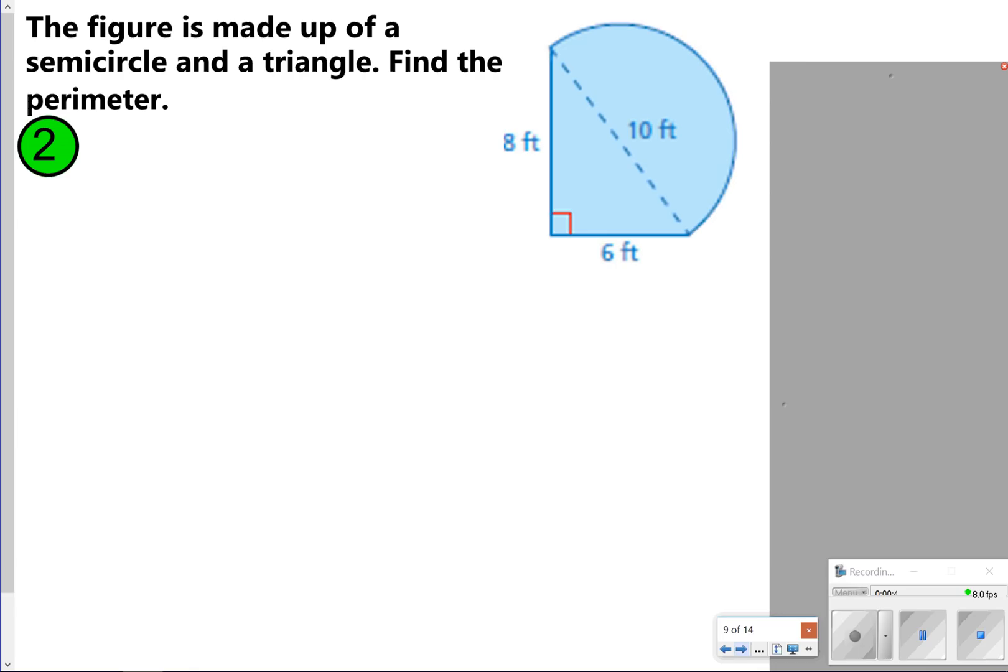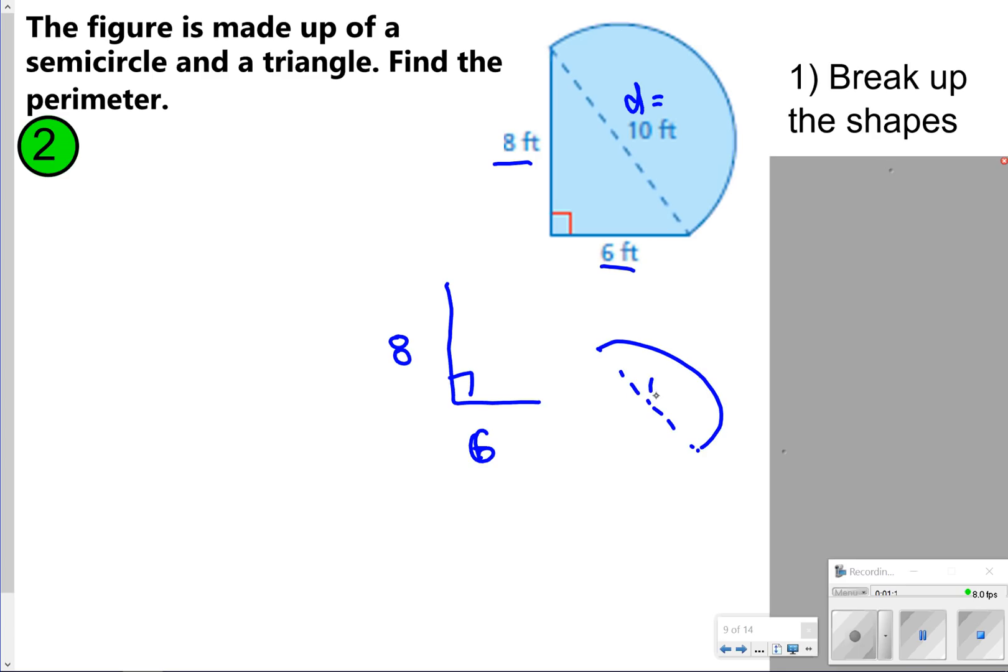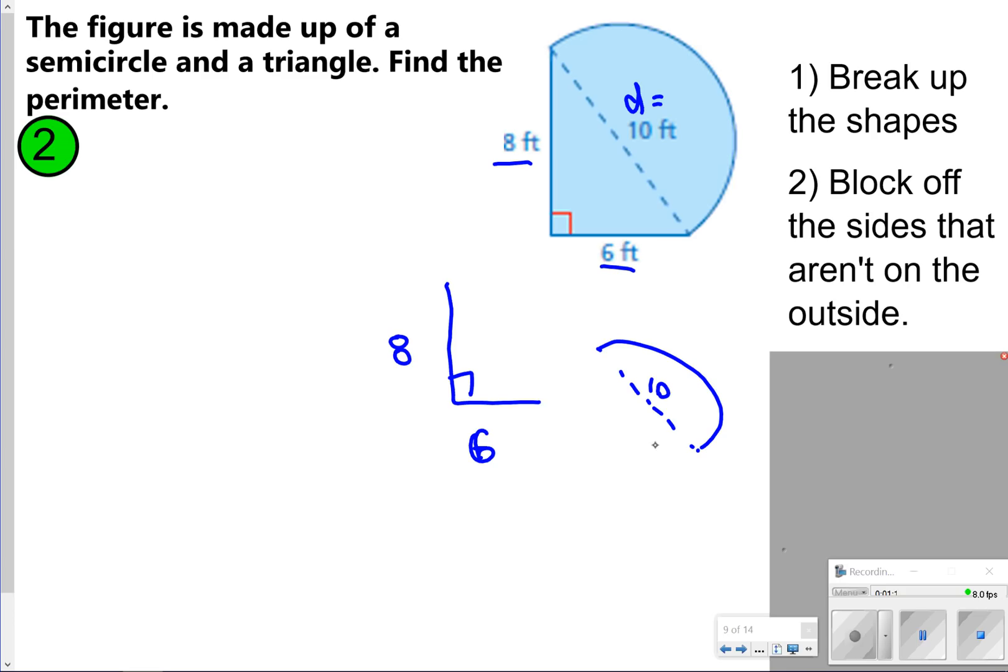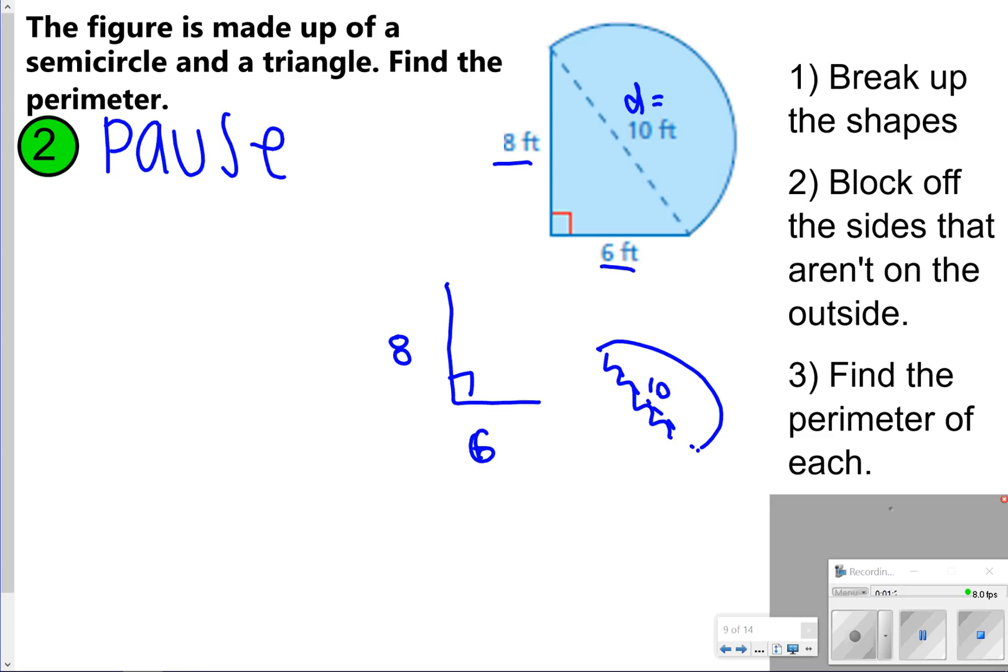In number two we're trying to figure out the perimeter of the semicircle and the triangle put together. We have one side of the triangle is eight feet, one side is six feet, and the diameter of the semicircle is 10 feet. Some ideas you might want to consider: breaking up the shapes would be helpful for you to find the perimeter. I would usually just write the shapes without them being connected, and then find the sides that are not on the outside. Obviously we're not going to be finding the inside of the semicircle. We just need to figure out the perimeter of each. Go ahead and pause the video now. Try the perimeter of the triangle plus the semicircle, only considering the outer edges. Once you're done, click play so you can check your work.